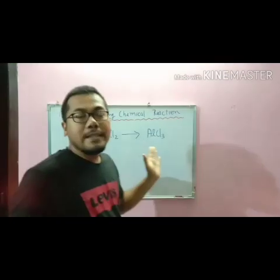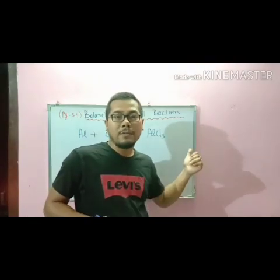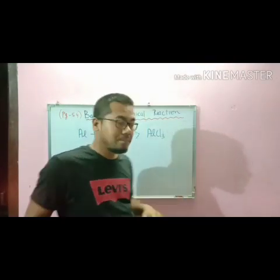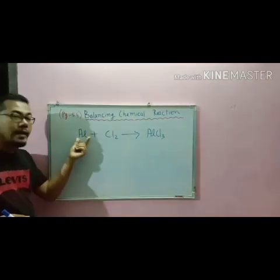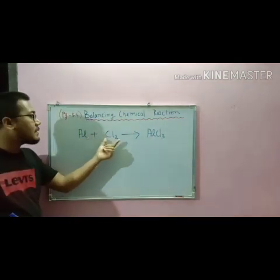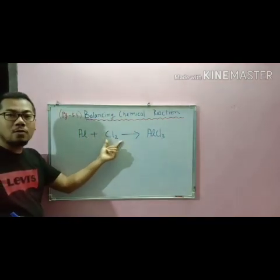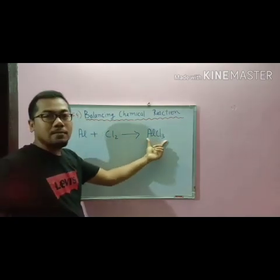Now we will take another chemical equation and try to solve it. Here, Al stands for aluminium and Cl stands for chlorine, and what is formed is aluminium chloride.